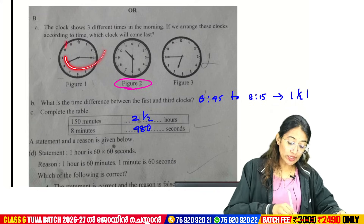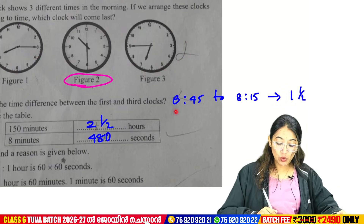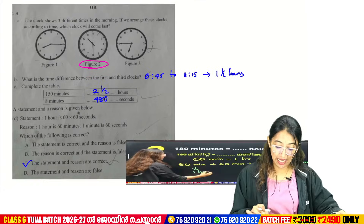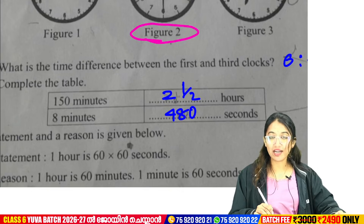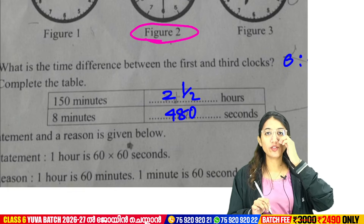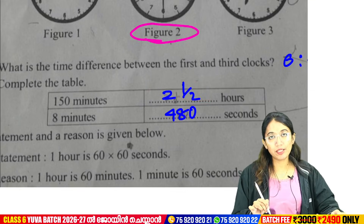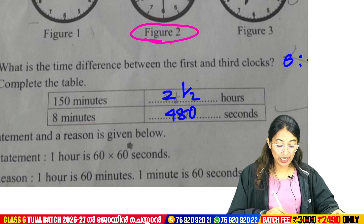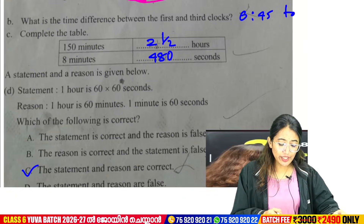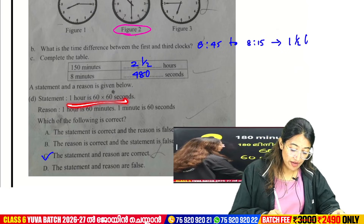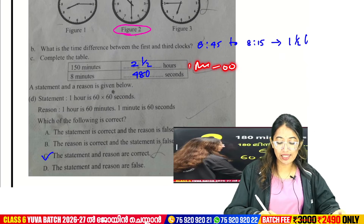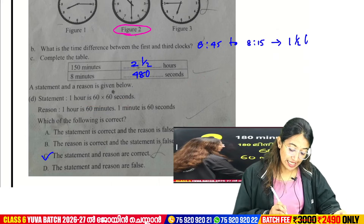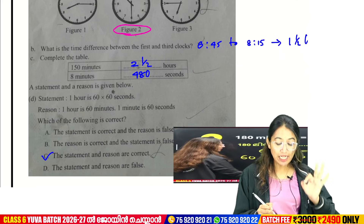What is the time difference between the first and third clock? The 3rd clock is at the same time — the difference is 1. I will complete this table. This is done in 180 minutes. If we take this, we take it in 1st, 2nd, and 3rd. 180 minutes — how many seconds is it? 1 minute is 60 seconds. 1 minute is 60 into 8 = 480 seconds. 1 hour equals 60 into 60 seconds. 1 hour equals 3600 seconds. The option is C.